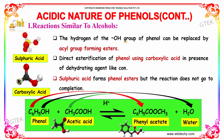The hydrogen of the OH group of phenol can be replaced by an acyl group, forming esters. Direct esterification of phenol using carboxylic acid in the presence of a dehydrating agent like concentrated sulfuric acid forms phenol esters, but the reaction does not go to completion. As seen here, phenol reacts with acetic acid in the presence of H⁺ to produce phenyl acetate.